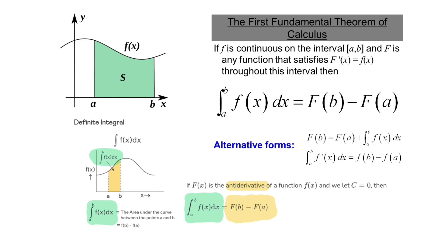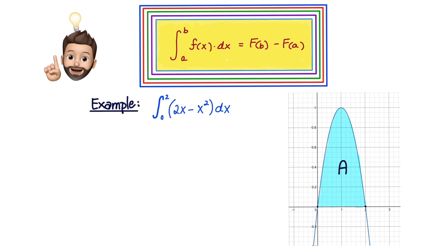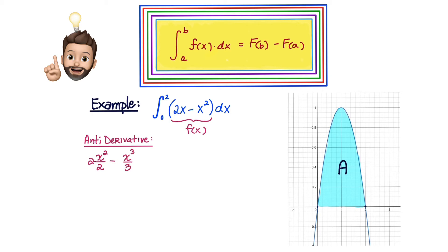The first fundamental theorem of calculus can be stated in a number of ways. Take, for example, the integral from 0 to 2 of the function 2x minus x squared. Our function 2x minus x squared is a parabola, graphed on the right. We're interested in finding the area under the curve from 0 to 2. The anti-derivative of 2x minus x squared is going to be 2 times x squared over 2 minus x cubed over 3 plus c. The 2's will cancel each other out, and so we can write the anti-derivative as x squared minus one-third x cubed plus c.